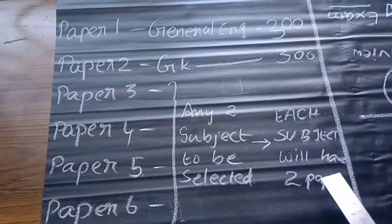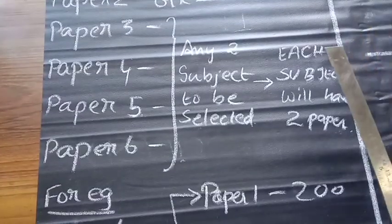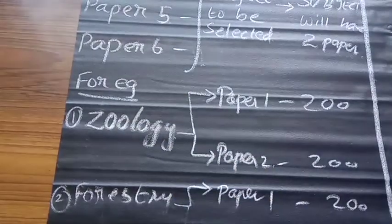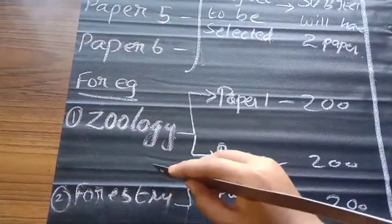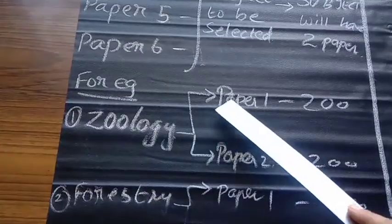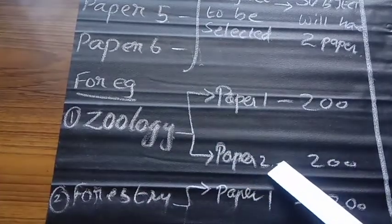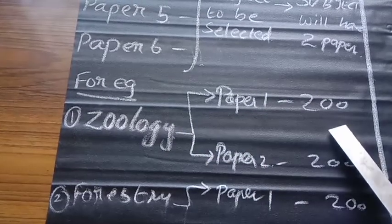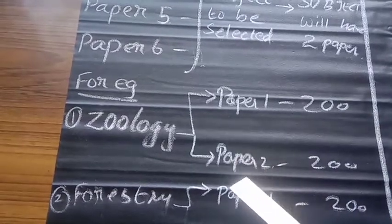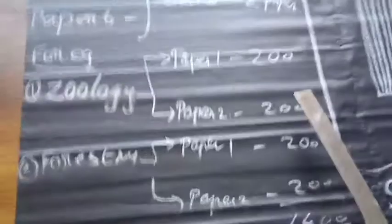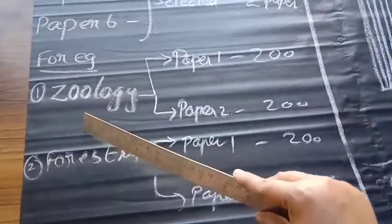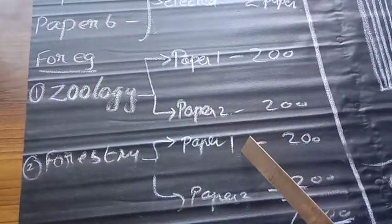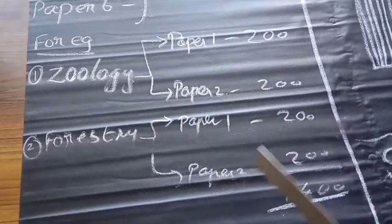Each subject will have 2 papers. Let me explain with an example. If I am selecting zoology and forestry as my optional subjects, in zoology I will have zoology paper 1 and zoology paper 2. Zoology paper 1 will be for 200 marks and zoology paper 2 will be for 200 marks. Next, forestry also has forestry paper 1 for 200 marks and forestry paper 2 for 200 marks. So the total marks is 1400.